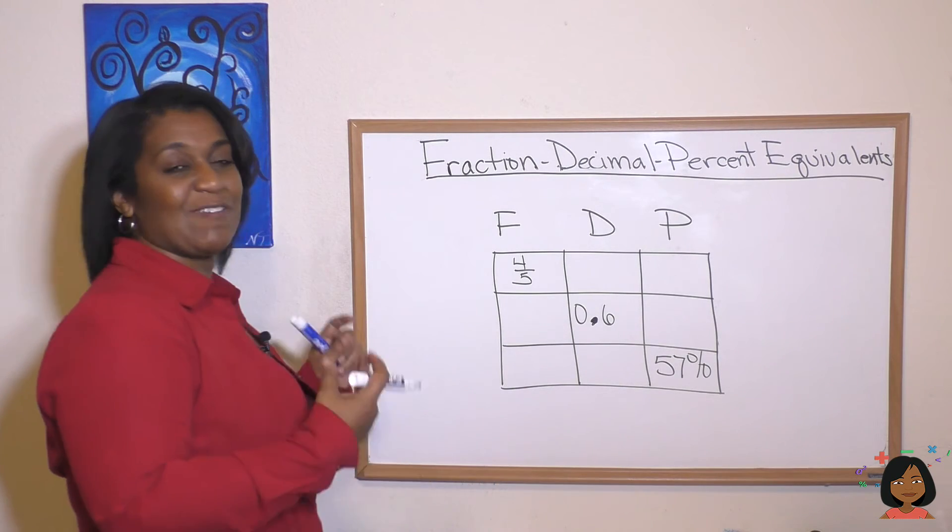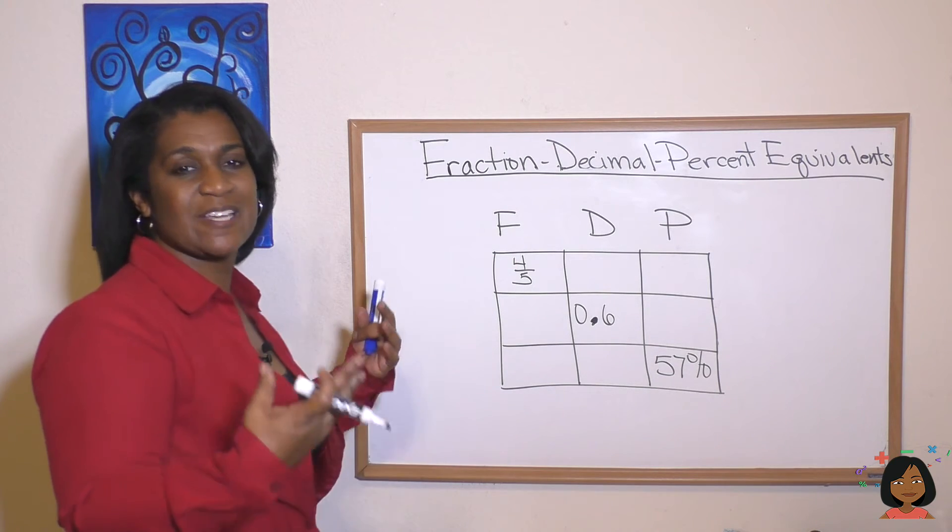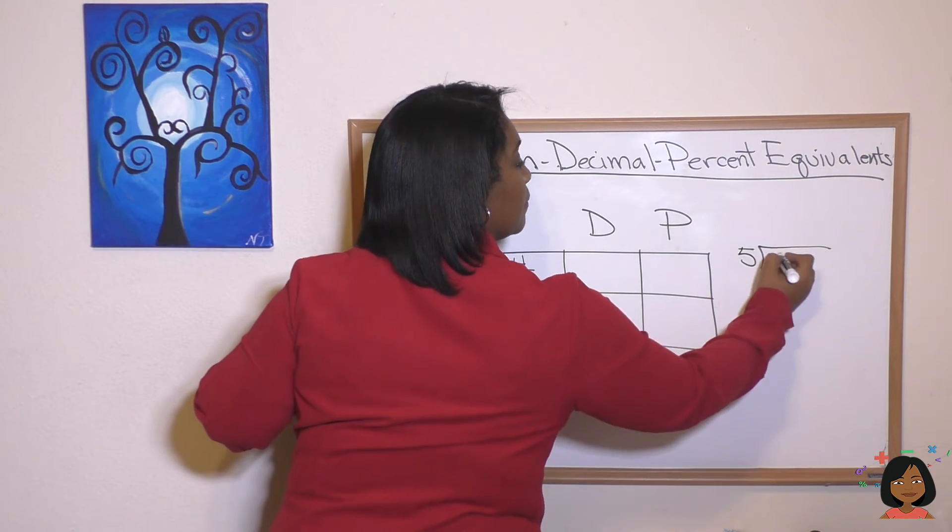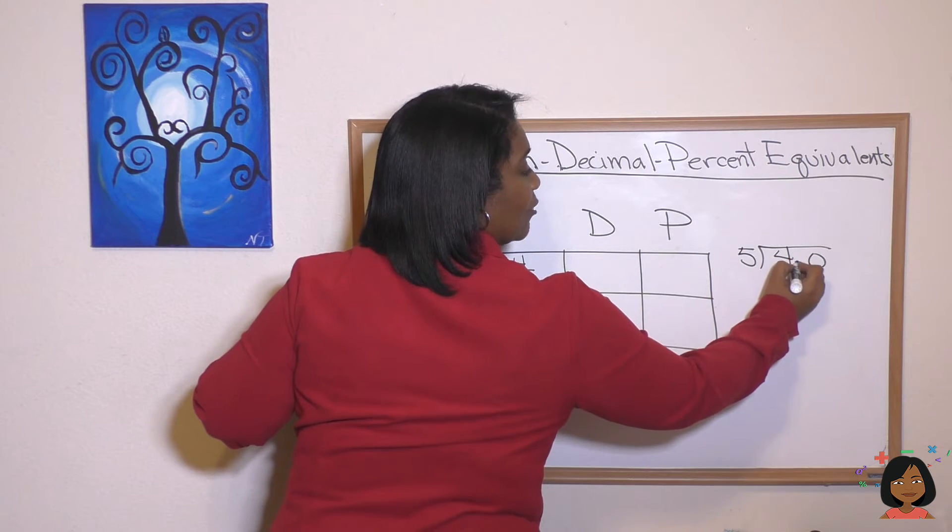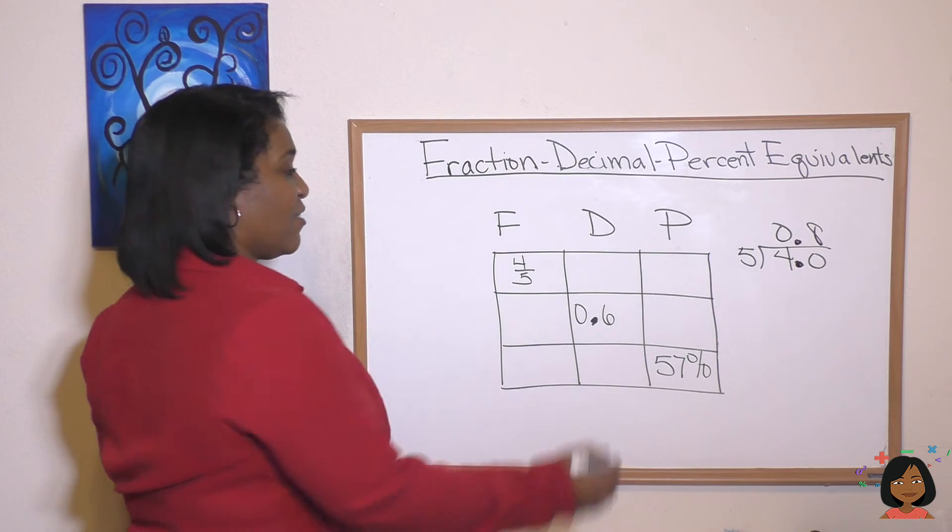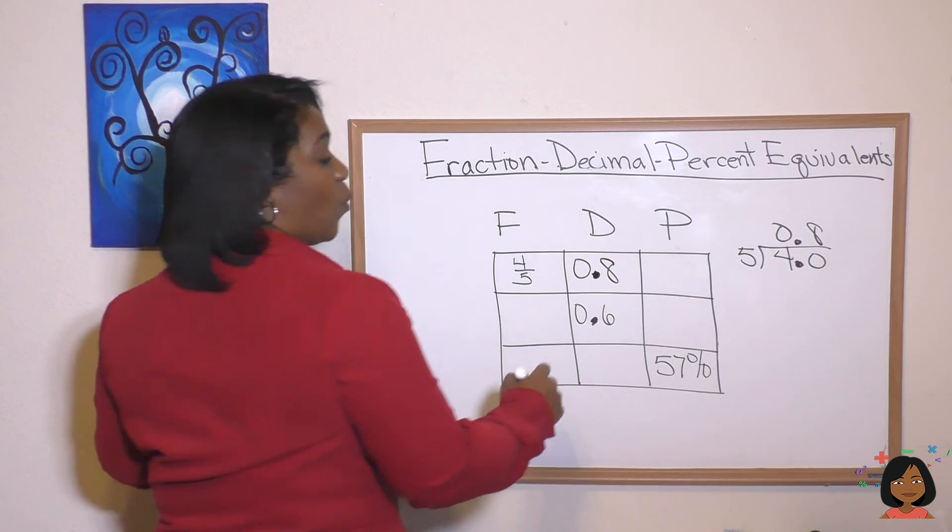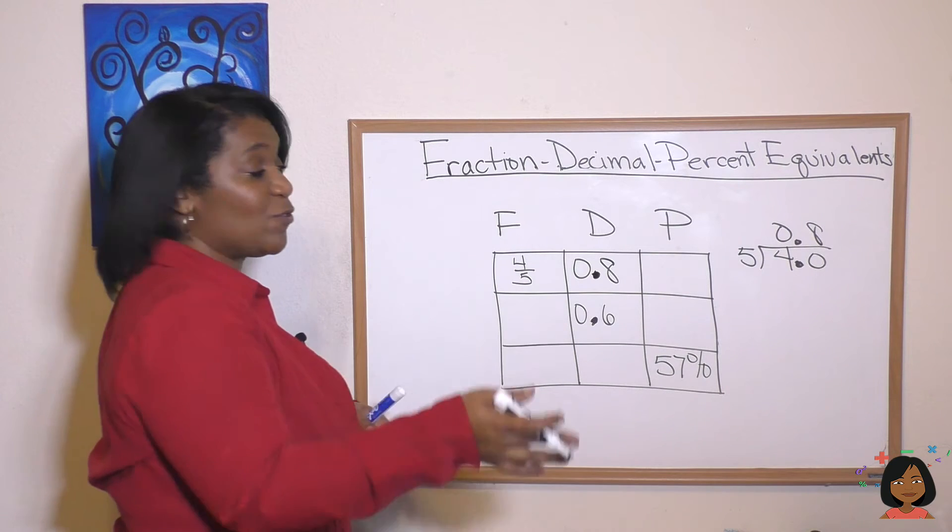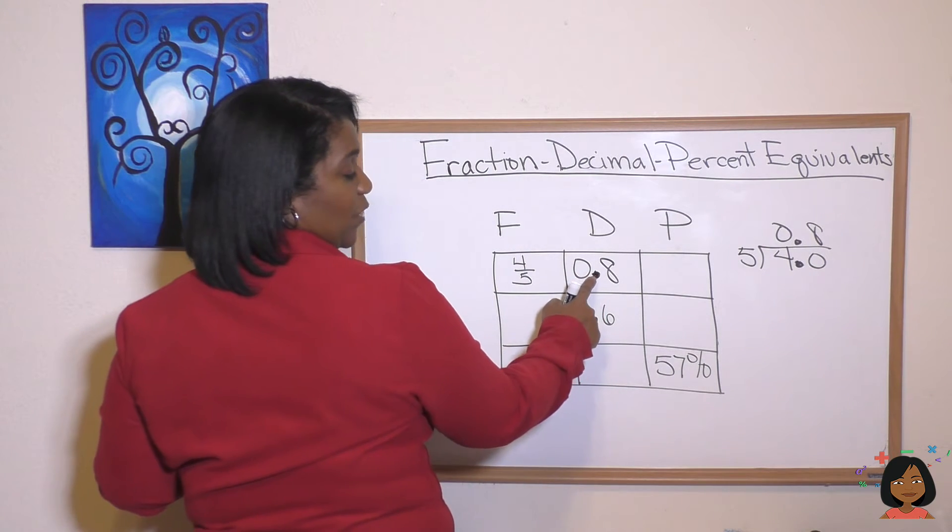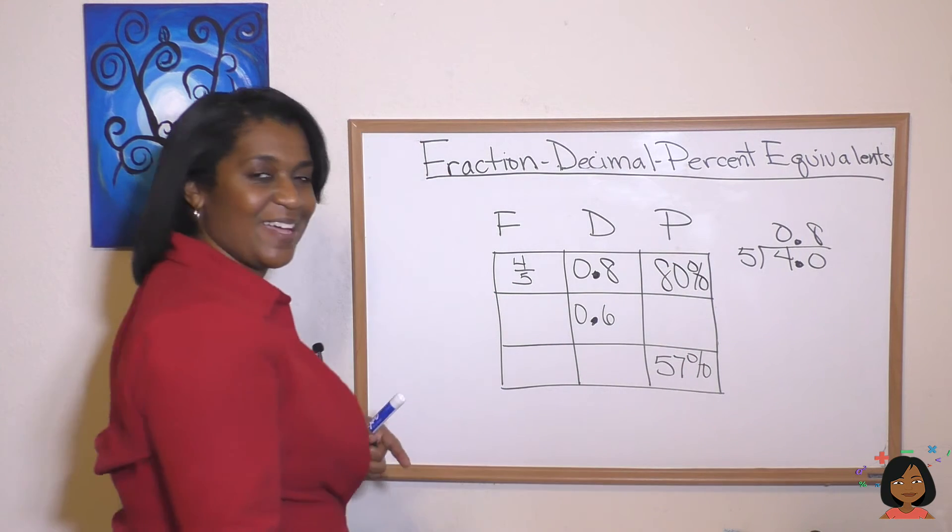Let's do it. So my first one I'm giving you a fraction of four fifths. Well to get to a decimal we know we divide. So let's do our math over to the side. And our little decimal. And we know that's going to be 0.8 for our decimal. And once we have our decimal it's easy to move to a percent. We know we're going to move it two to the right. One two. Which will give us 80 percent. Nice.